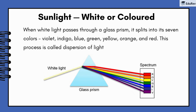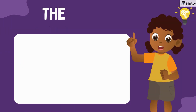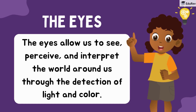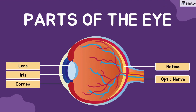Now, let's talk about eyes. Our eyes are amazing — they allow us to see, perceive, and interpret the world through light and color. Eyes have different parts: lens, iris, cornea, retina, and optic nerve.